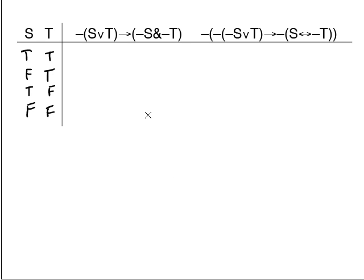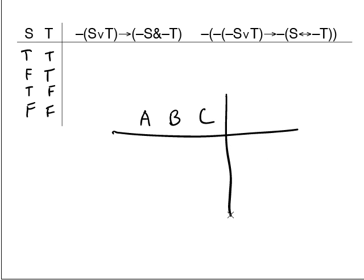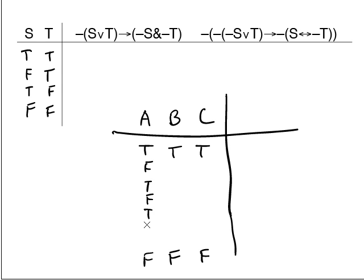This is probably not a bad point at which to ask: if you had three different sentence letters, how many rows would you have to list and how do you do it? It's going to be eight rows. You're going to have the case where they're all true and the case where they're all false. The easy way to generate these is to alternate by ones in the first column: true, false, true, false, true, false, true, false.